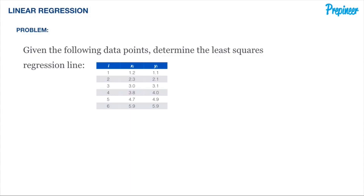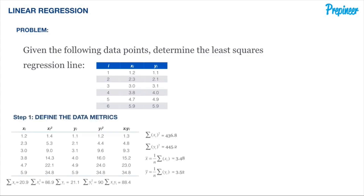Say we're given the following data points — let's determine the least squares regression line. The least squares regression line is given in standard form and can be found using the following process.